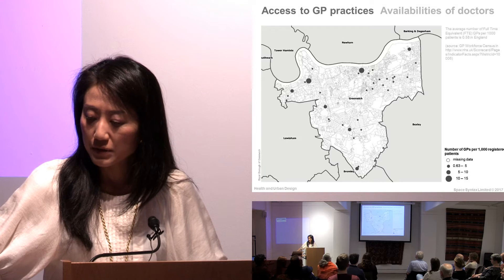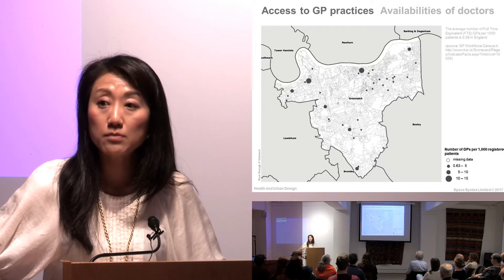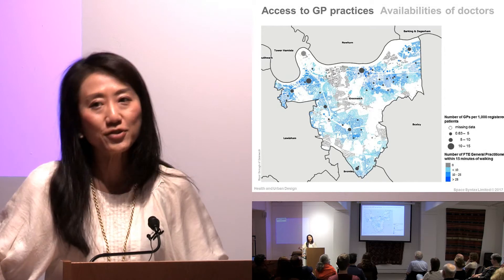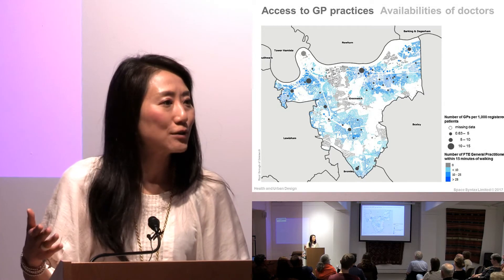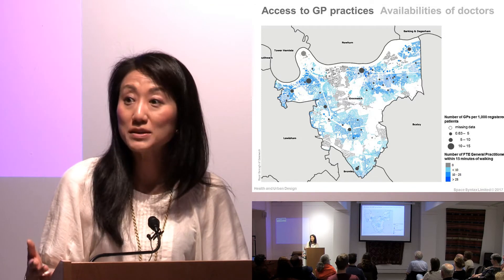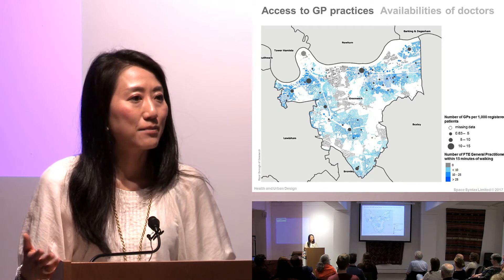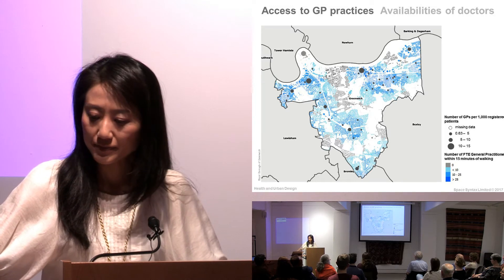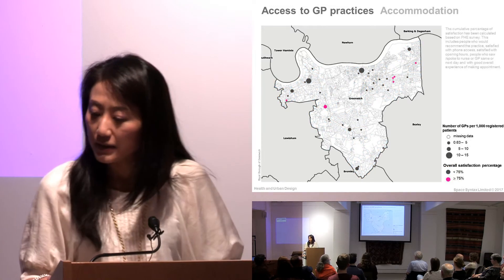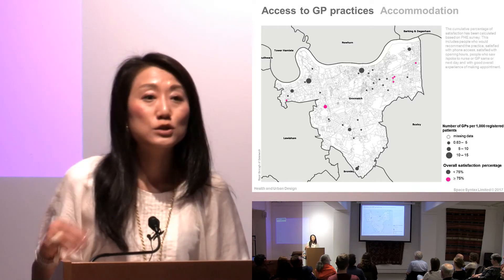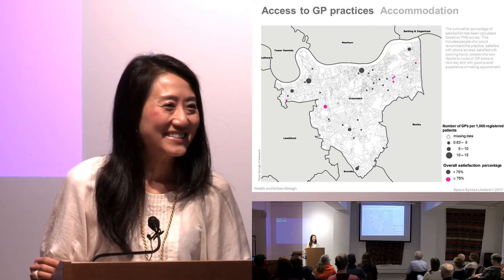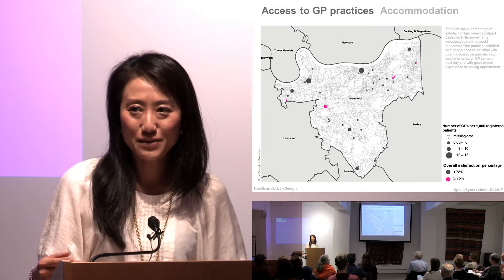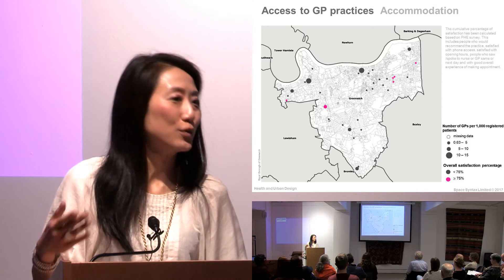For example, we looked at the number of doctors per patient, and then you can calculate the number of households within certain catchment areas and how many of them have a certain level of doctors. Also, quality is important — not only that you can access a GP surgery, but is it a good GP surgery or not?